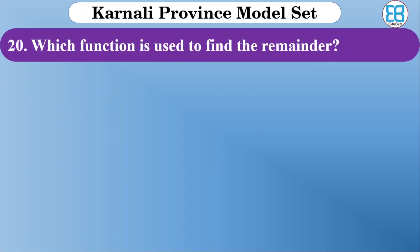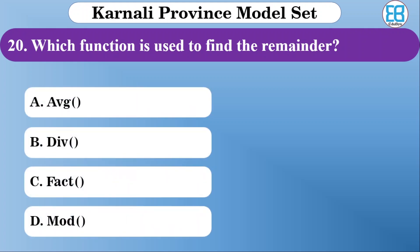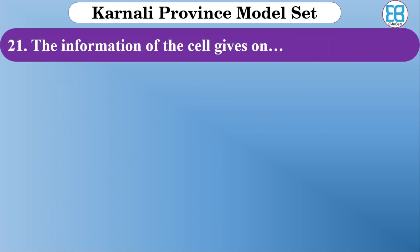Which function is used to find the remainder? The options are DIV, MOD, and FACT. The correct option is MOD — the MOD function is used to find the remainder.